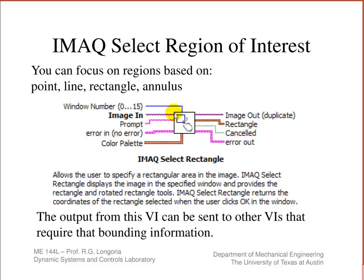One important VI is the IMAG Select Region of Interest. When you send the image to it, you also prompt the user for input. The user can draw a rectangle around the area they want to analyze, and that rectangle information can be sent to other VIs. It's very simple.